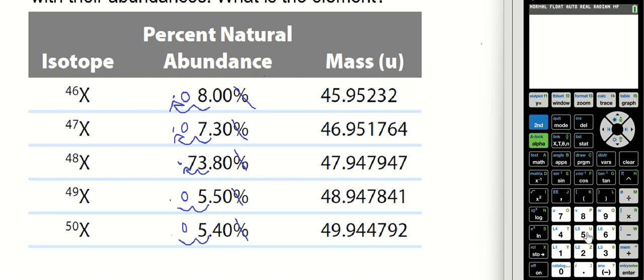Here we go. The first isotope, X-46, has a mass of 45.95232. Multiply that by the percent abundance, which is 0.08. Again, I'm just going to put the zeros there because just by looking at my calculator, I know my number of sig figs I should have is 3.67 or 3.68.